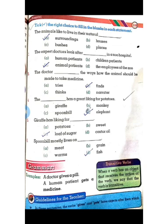Come towards page number 119: tick the right choice to fill in the blanks. Number one: the animals like to live in their natural surroundings — answer is 'surroundings.' Number two: the expert doctors look after animal patients in a zoo hospital. Number three: the doctor finds the ways how the animals should be made to take medicine. Number four: the elephant has a great liking for potatoes; giraffe has a liking for a loaf of sugar; spoonbill mostly lives on fish.